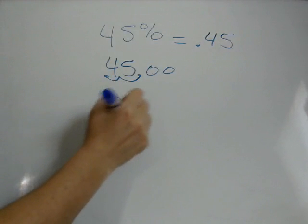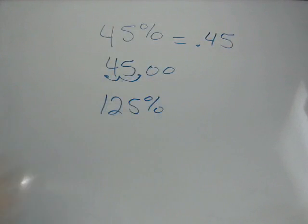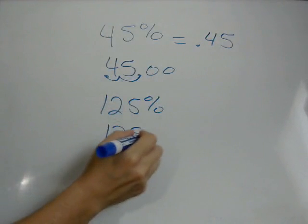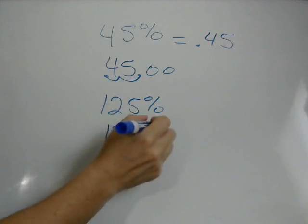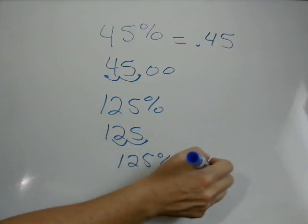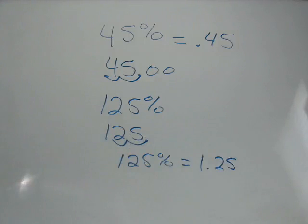What if we had 125%, same thing. You always only move it twice. So we have 125, the decimal is there, one, two. So 125% can be written as 1.25.